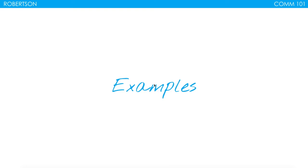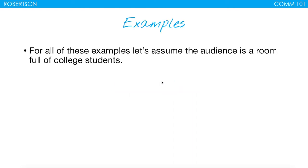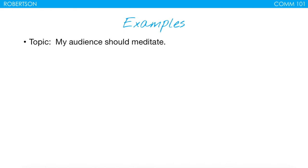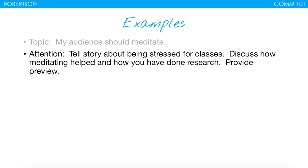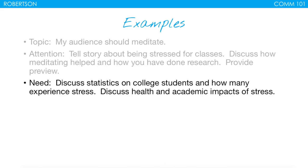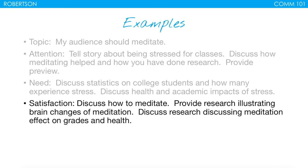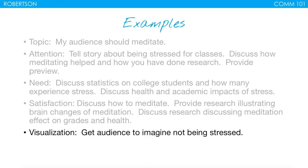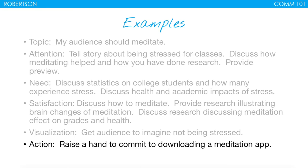Here are some examples, assuming the audience is a room full of college students. First topic: my audience should meditate. You might gain attention by telling a story about being stressed for classes, discussing how meditating helped you, mentioning your research, and then providing a preview. In the need step, discuss statistics on college students experiencing stress and the health and academic impacts. The satisfaction step discusses how to meditate, with research illustrating brain changes and impacts on grades and health. The visualization step gets the audience to imagine not being stressed and their grades going up. The action step: raise a hand to commit to downloading a specific meditation app.